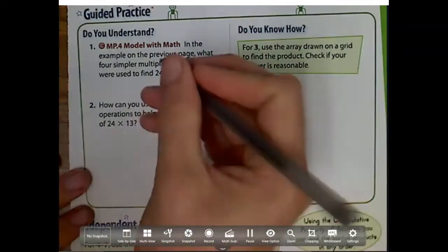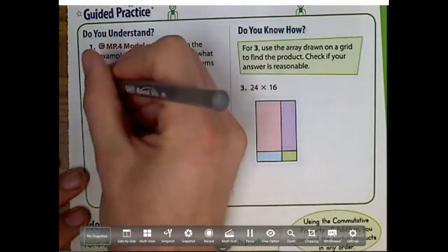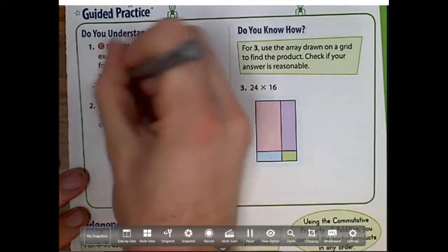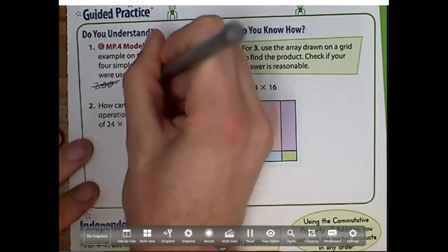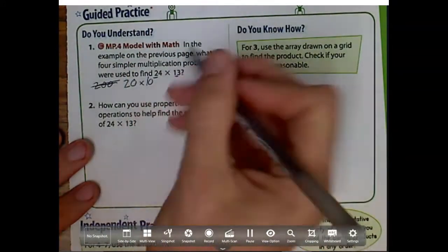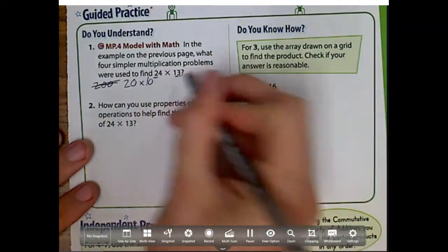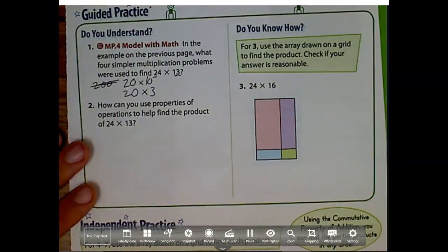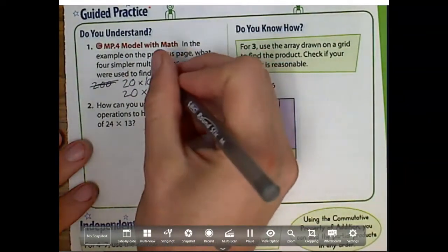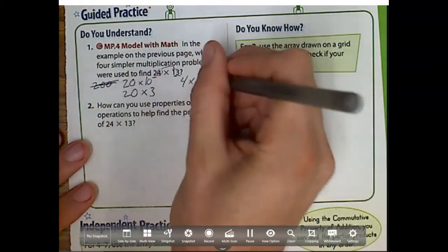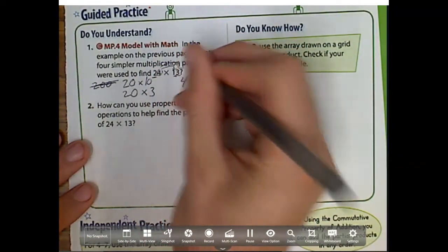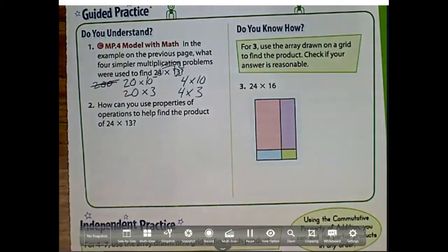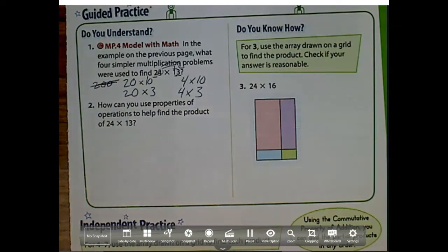Well, if you remember, we had broken it up and we had done 20 times 10, because we're multiplying by those place values. 20 times 10. We had done 20 times the one place value, which is 20 times 3. We had also done 4 times 10. And we had done 4 times 3. It doesn't tell us to solve them, so we're going to leave it just like that.